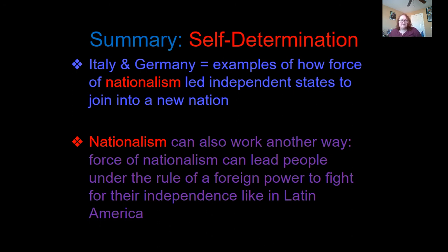So food for thought — how does Germany achieve its goals in all of this? In summary: self-determination. Italy and Germany are perfect examples of how the force of nationalism led independent states to join into a new nation. Nationalism can also work another way — the force of nationalism can lead people under the rule of a foreign power to fight for their independence, like it did in Haiti. When it comes to Germany and Italy, it was a shared language, a shared background, and a shared understanding that united all of them together.